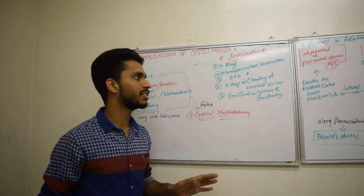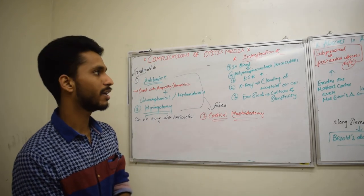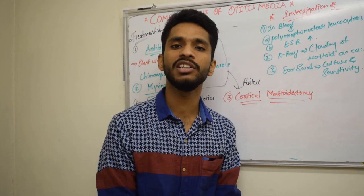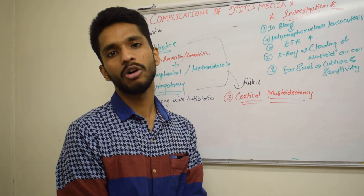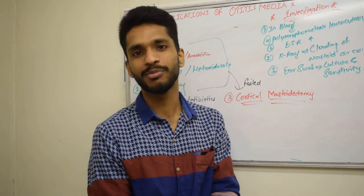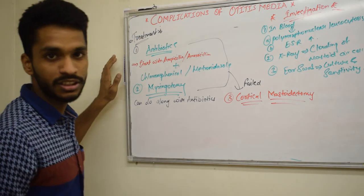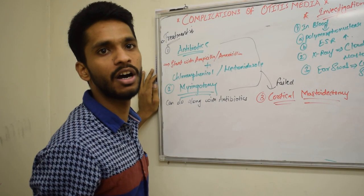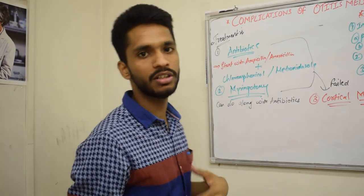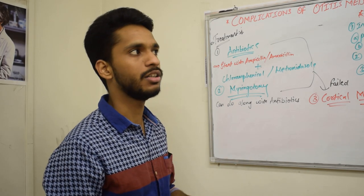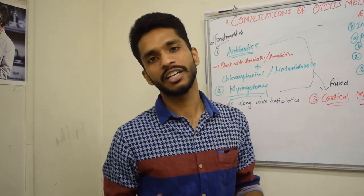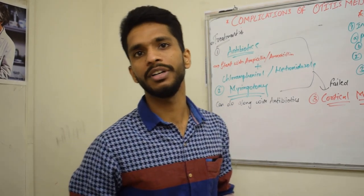To summarize: Acute mastoiditis is inflammation of the mucosal lining of the mastoid antrum — the most common intratemporal complication of acute otitis media. The most common causative organism is beta-hemolytic Streptococcus pneumoniae. The first visible sign is ironed-out appearance of the skin. Treatment involves antibiotics and myringotomy; if these fail, cortical mastoidectomy is performed. In the second part, we will discuss lateral sinus thrombophlebitis and brain abscesses. Thank you.